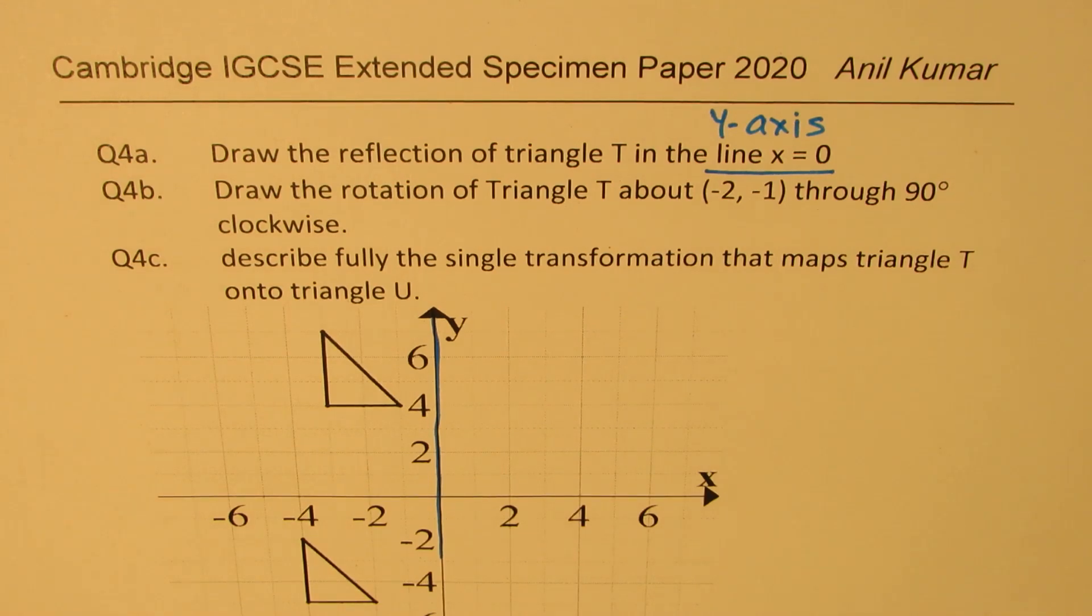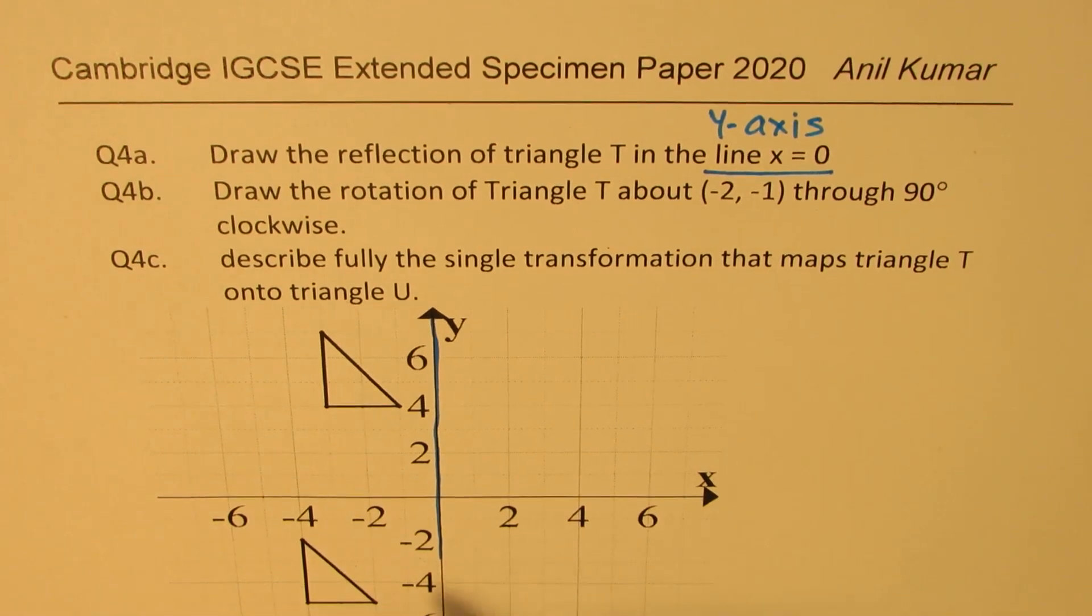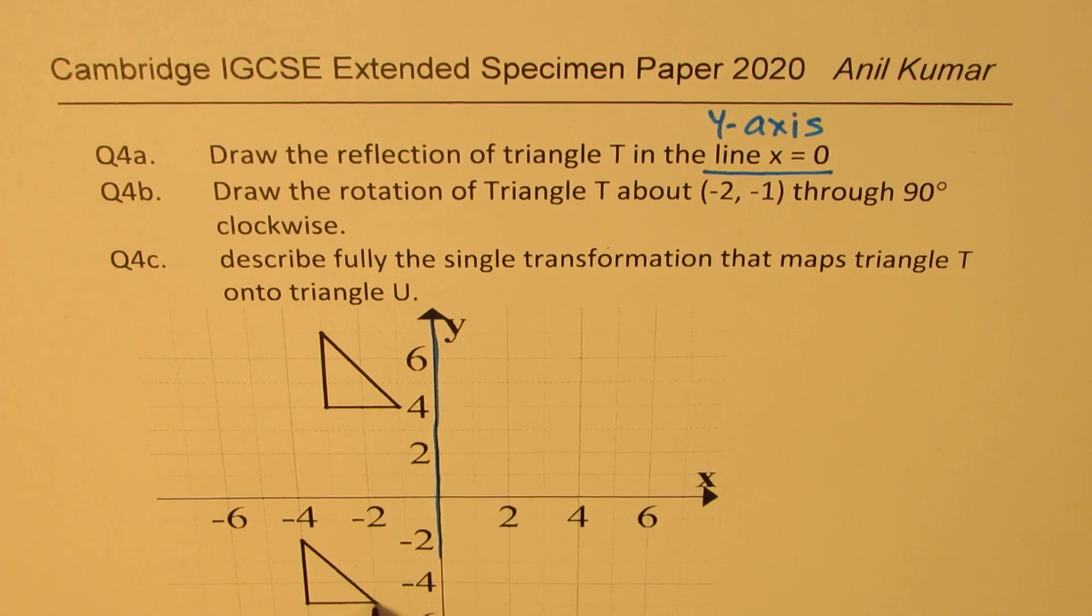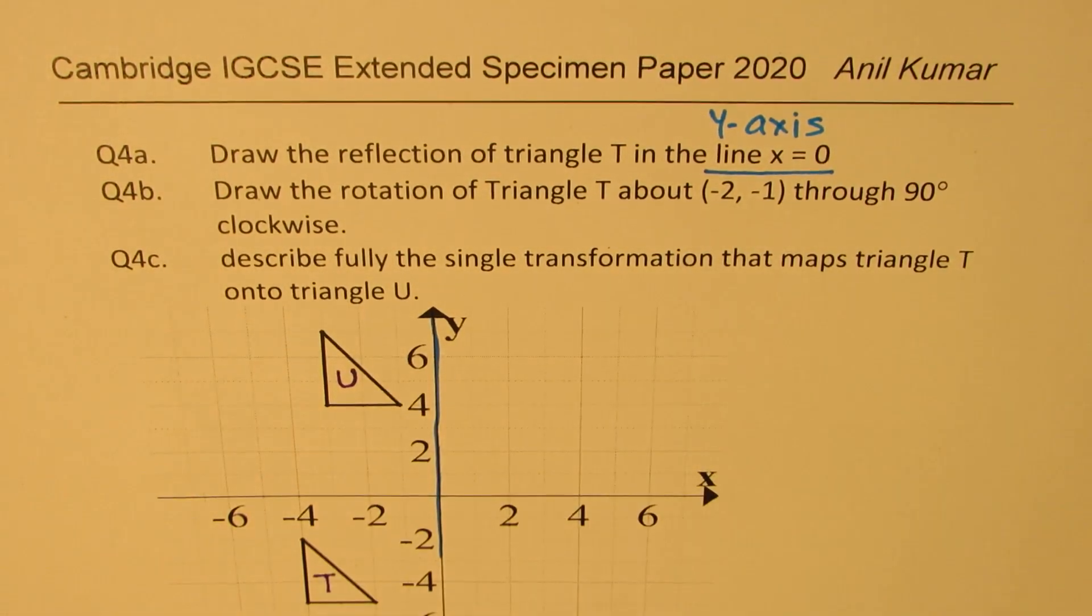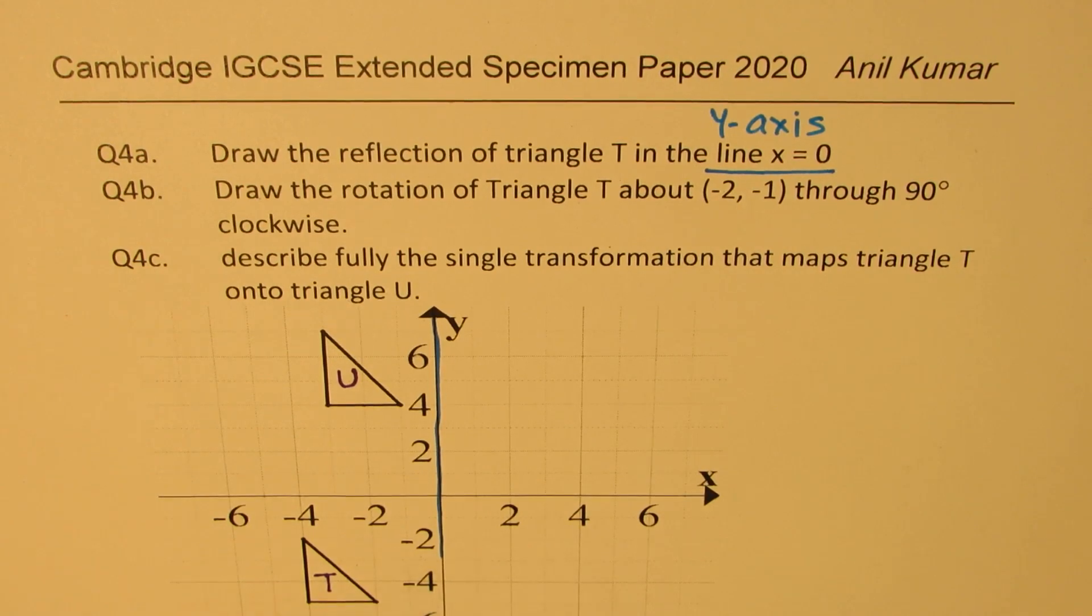I hope this first thing is very clear. Now it becomes very simple. So this point, that is the triangle for us, triangle T. The other triangle is triangle U. The coordinate points will be reflected so they look the same distance away. So at minus 2, we'll come to the value 2.